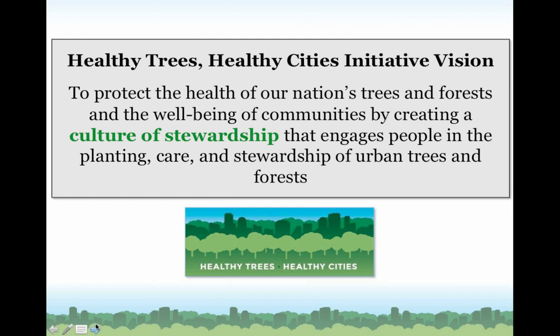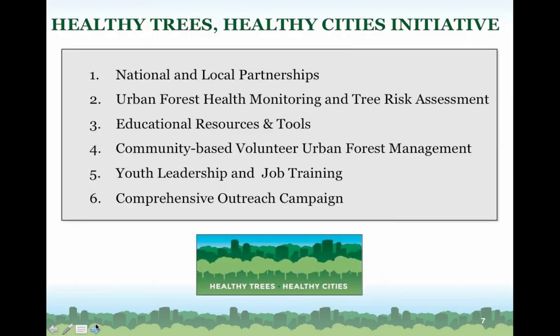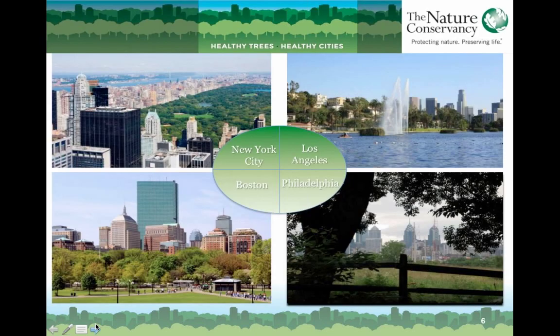We have a broad approach to encouraging community groups, volunteers, and people we call our citizen scientists in the management of urban trees. We truly believe that one of the best ways to try and prevent the spread of these pests and diseases is by engaging the public. Currently, we are working in four pilot cities: New York City, Los Angeles, Boston, and Philadelphia, and we're currently exploring opportunities to expand in other cities throughout the nation.